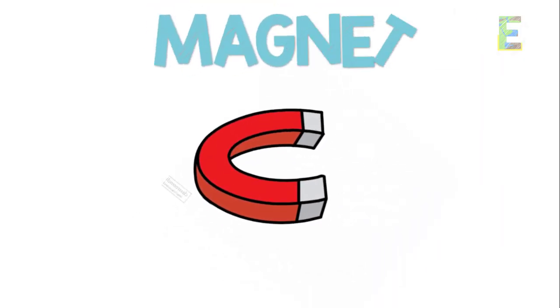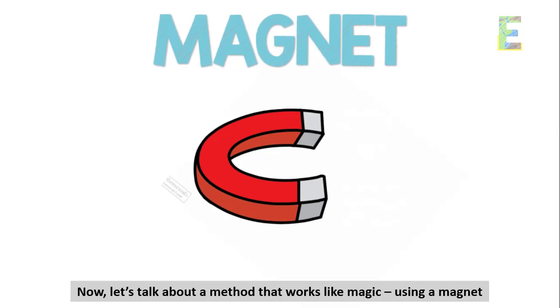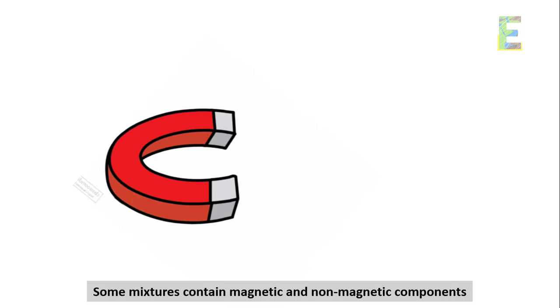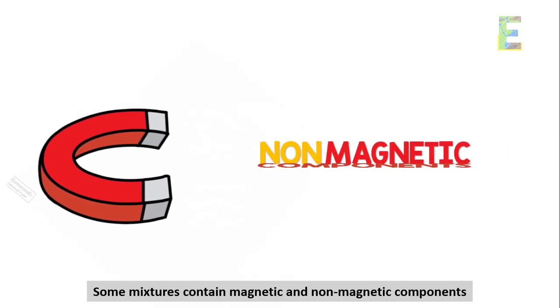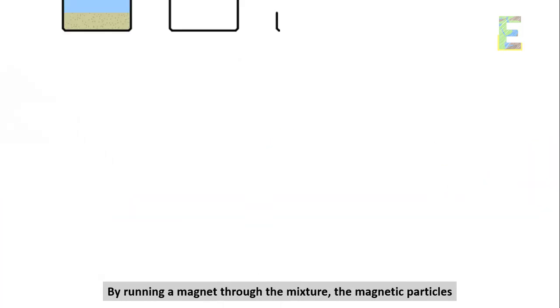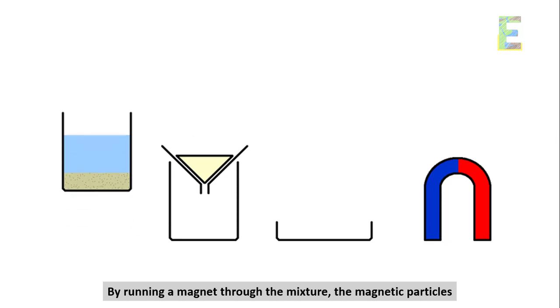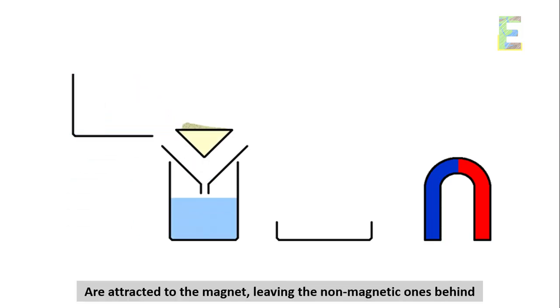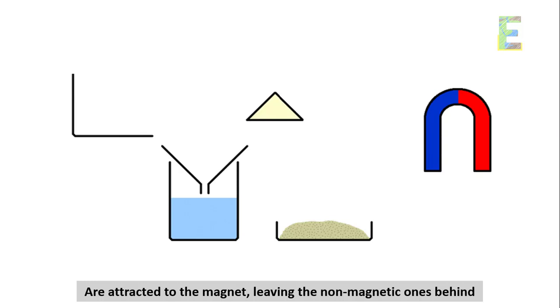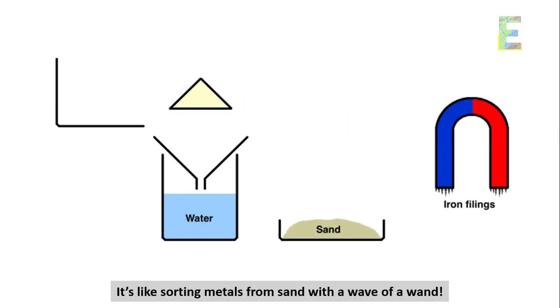Using a magnet. Now, let's talk about a method that works like magic, using a magnet. Some mixtures contain magnetic and non-magnetic components. By running a magnet through the mixture, the magnetic particles are attracted to the magnet, leaving the non-magnetic ones behind. It's like sorting metals from sand with a wave of a wand.